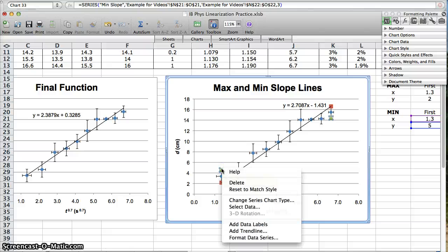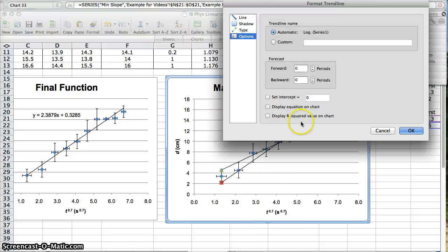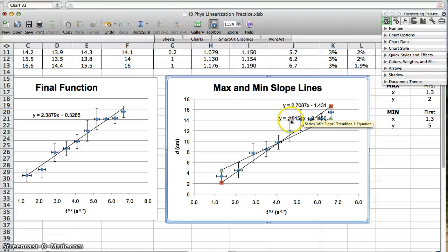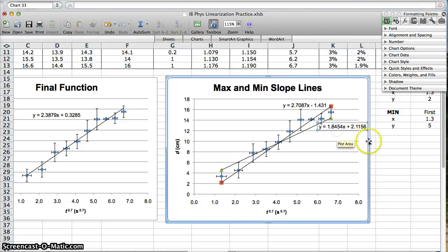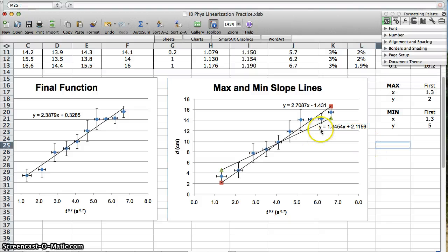Right click on this one. Add the trend line. Display the equation. Here's my min slope. Cool. 1.8454. Right? Just like that. Easy as pi. Okay.